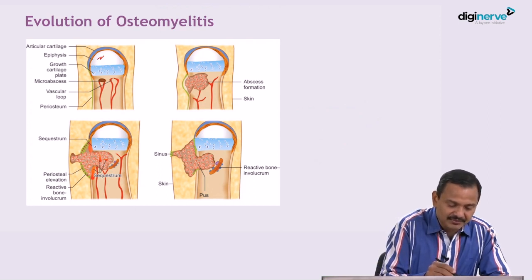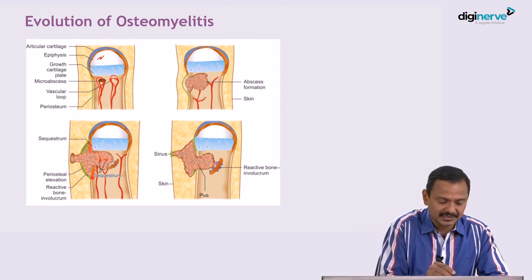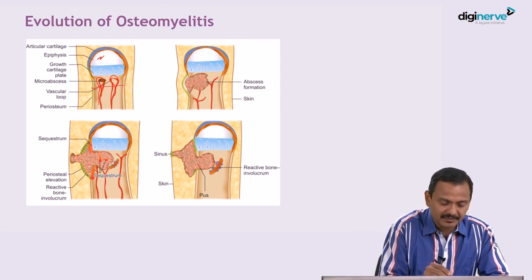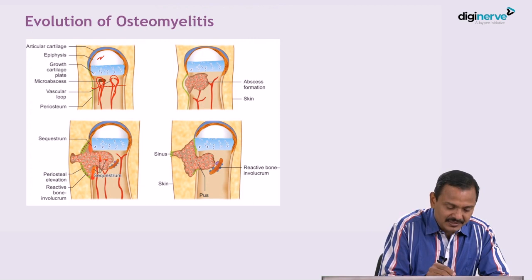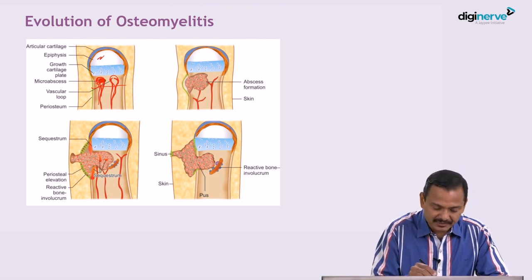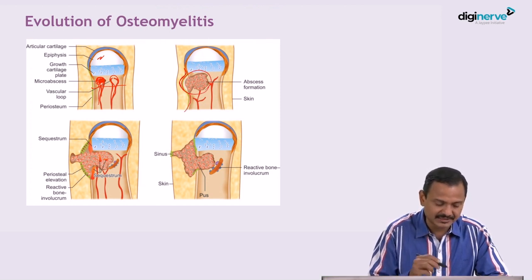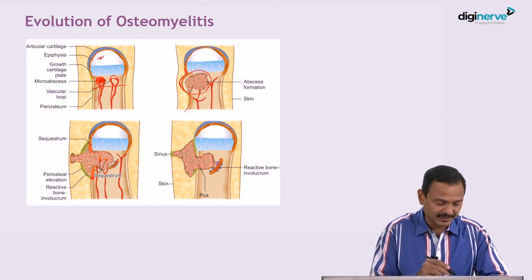If you see here, this is the epiphysis and this is the metaphysis region. In the metaphysis, you can see the vessels are loopy — a lot of capillary network will be there in the metaphysis region. The infection starts here. The micro abscess forms, then the micro abscess becomes a bigger abscess, and the periosteum is still intact.